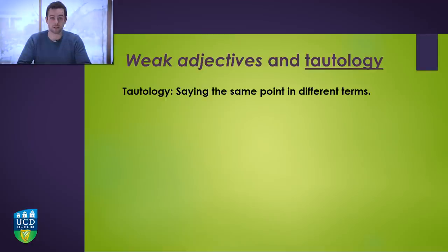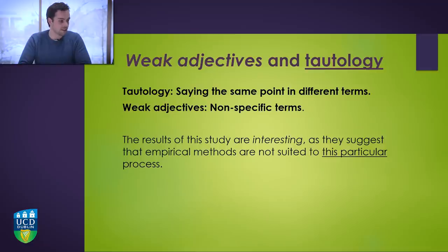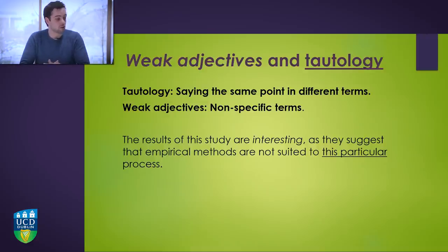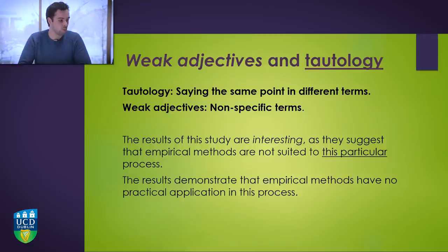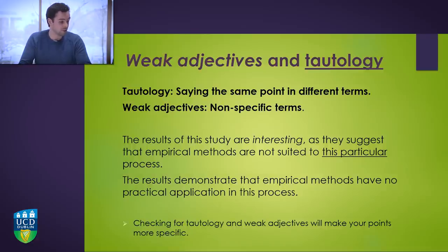Regarding weak adjectives and tautology: tautology means saying the same point in different terms; weak adjectives are nonspecific terms. For example: 'The results of this study are interesting as they suggest that empirical methods are not suited to this particular process.' This can be made more direct: 'The results demonstrate that empirical methods have no practical application in this process.' Here, 'this particular' is a tautology — a redundant phrase. Checking for tautology and weak adjectives makes your points more specific.